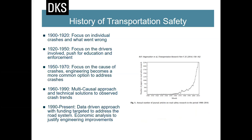This is the history of transportation safety. As time has passed, we've taken a more data-driven approach and are doing more economic analysis to justify engineering improvements. Early on, the focus was on education and enforcement. Then as crash numbers grew, we looked at patterns. More recently, we've taken more responsibility on the engineering side, resulting in the Highway Safety Manual as a product of that data-driven approach.